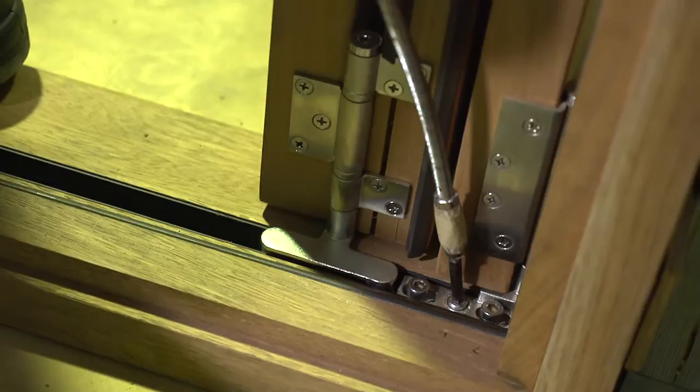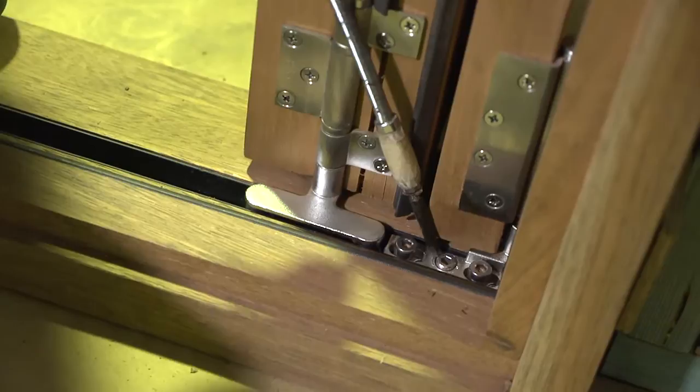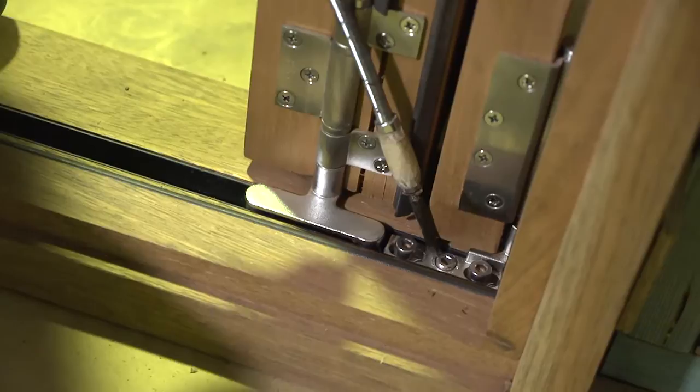It's just loosening off our bottom pivot point. To do this all we do is just loosen off the two outside Allen keys slightly. It actually allows us to move that pivot door backwards and forwards.